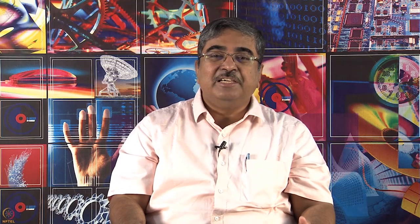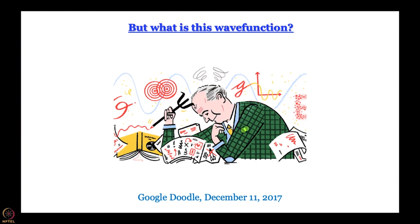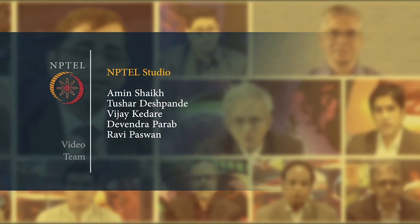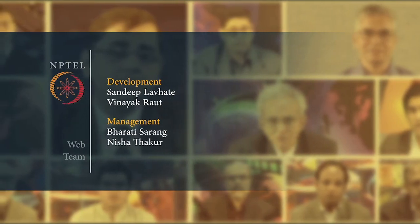But the question we have not answered after all this discussion is: what is this wave function? We have a wave function, a wave equation — we can find a property using the appropriate operator — but what is the wave function itself? This question has given rise to a lot of intrigue beyond the realm of scientists. What you see here is a Google Doodle that came out on December 11, 2017, to commemorate the birthday of Max Born, whose work went a long way toward giving us some idea about what the wave function actually is. That is what we will discuss in the next module.